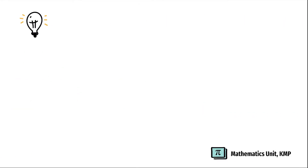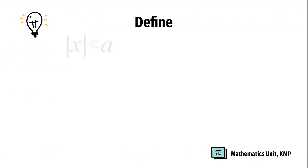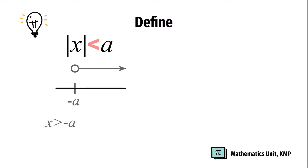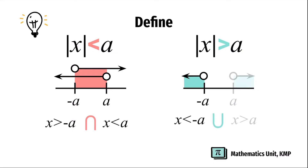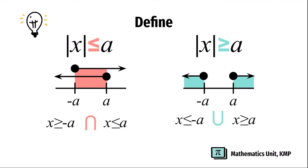This is the general idea on how to solve linear absolute inequalities. First, we're going to define. If you have absolute value of x less than a, then x is greater than negative a intersect with x is less than a. If we have absolute value of x greater than a, then x is less than negative a union with x is greater than a. The same applies if we have the equal sign, and we're going to use a closed circle.